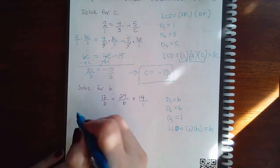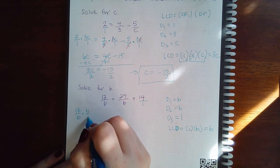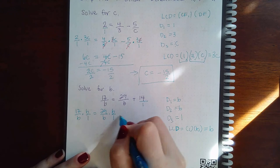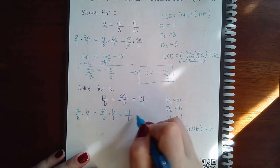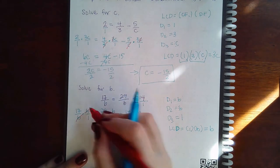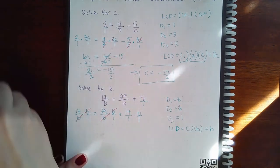So, I'm going to take 17 over B times B over 1 equals 29 over B times B over 1 plus 14 over 1 times B over 1. Here, the Bs will cancel. Here, the Bs will cancel. Nothing will cancel there.